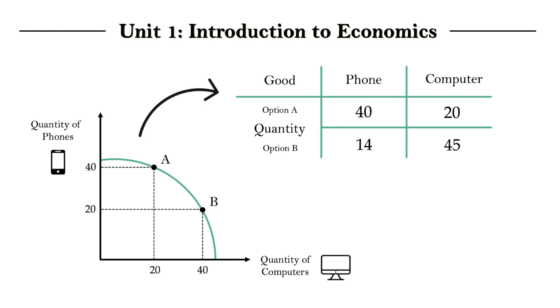Now, let's say that we start at option A, producing 40 phones and 20 computers. Now, as we switch over to option B, we can now produce 25 more computers. However, as we allocate more resources to produce 25 additional computers,